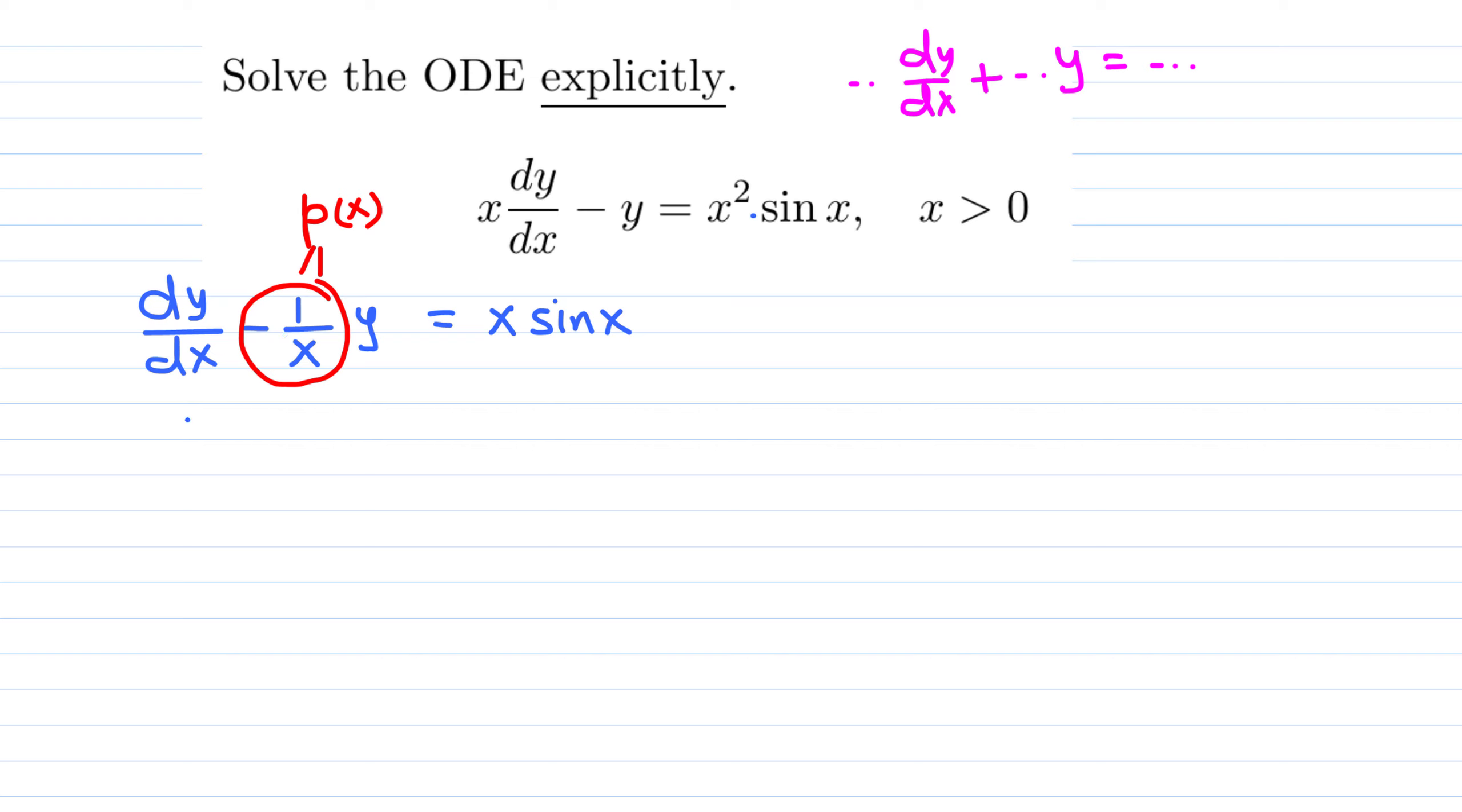Integrating factor is μ(x) = e raised to integral of that p(x), which is negative 1 over x dx. That is negative outside, 1 over x, and derivative of 1 over x is natural log of absolute x, but x is given positive so absolute value not needed. Negative means negative 1 move up, so e raised to ln x raised to negative 1. Now we can cancel e and natural log, x raised to negative 1, which is in fact 1 over x.